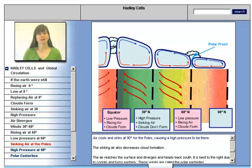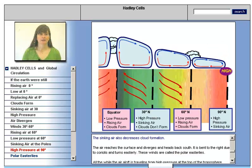Air cools and sinks at 90 degrees at the poles, causing high pressure to be there. The sinking air also decreases cloud formation.